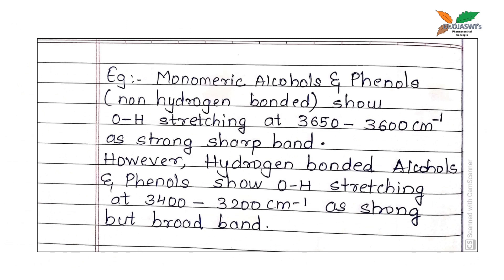Now, we will take the example of hydrogen bonding. Monomeric alcohol and phenols, non-hydrogen bonded, show the OH stretching at 3650 to 3600 cm inverse as a strong sharp band. However, hydrogen bonded alcohol and phenol show the OH stretching at 3400 to 3200 cm inverse as a strong but broad band.